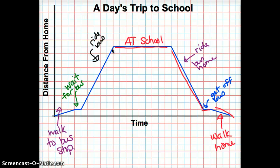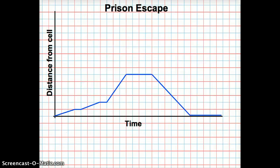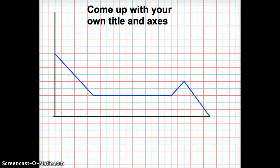This one's a lot of fun — I'm not going to explain this to you. Prison escape! The two variables I'm comparing here are time and distance from the cell. Your task is to come up with a good story for this and be prepared to share it in class tomorrow. Here is another graph — it could mean anything, so I want you to get creative and come up with your own title and axes to represent it. Again, I'm going to ask that you share it in class tomorrow, so be prepared — we'll be putting these graphs up and you'll get to talk about them.